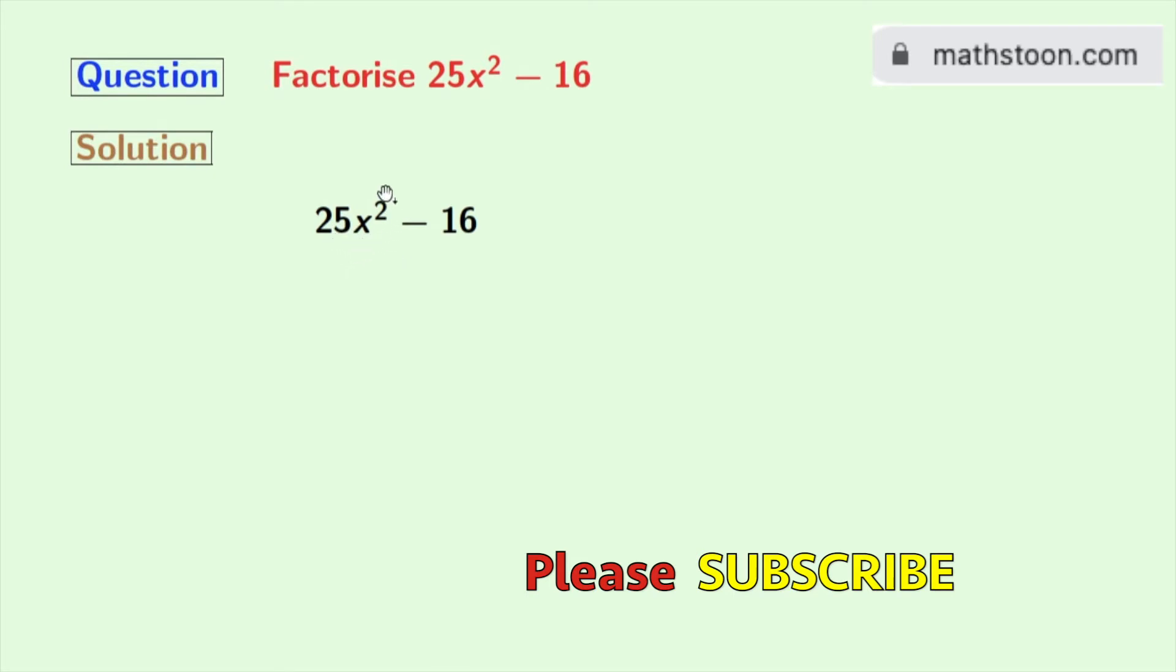To do so, we have to write 25x square as 5x whole square and 16 as 4 whole square. So we get 5x whole square minus 4 whole square.